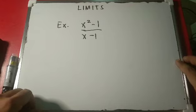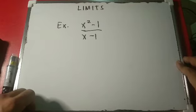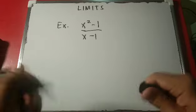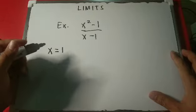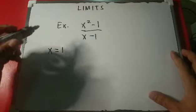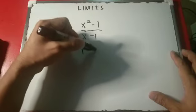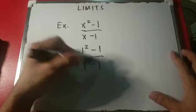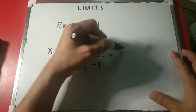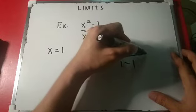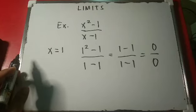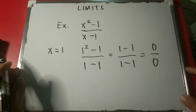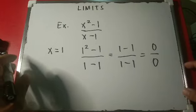So our example is x squared minus 1 over x minus 1. Let's try to work it out for x equals 1. When we plug in x equals 1, we have 1 squared minus 1 over 1 minus 1, which gives us 1 minus 1 over 1 minus 1, equal to 0 over 0.